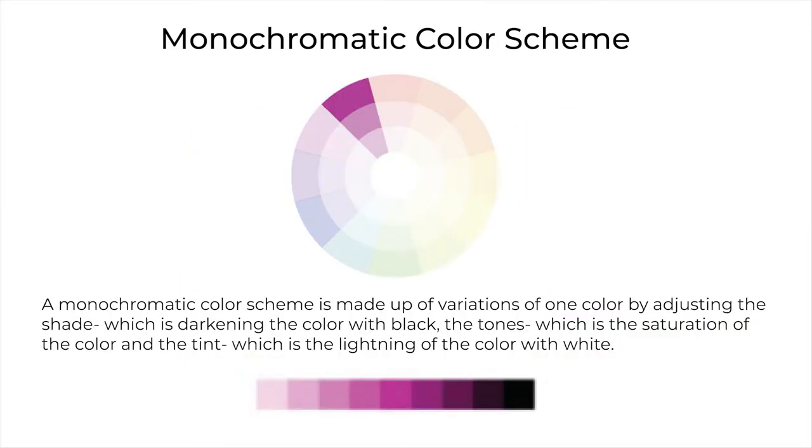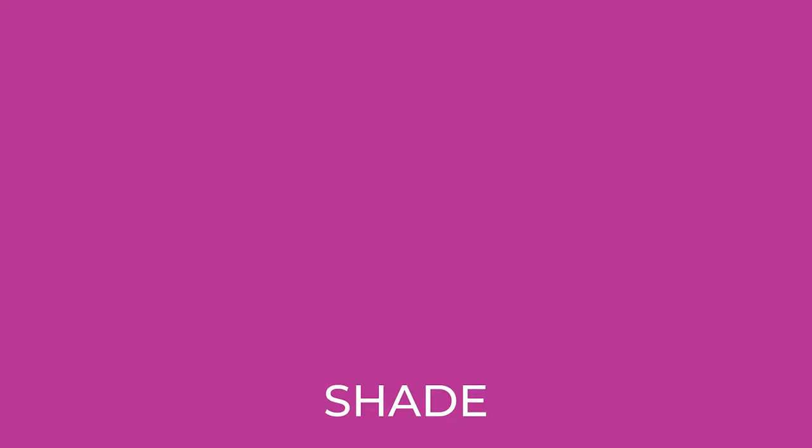The first is the monochromatic color scheme, which is made up of variations of one color by adjusting the shade — darkening the color with black — the tone, which is the saturation of the color, and the tint, which is the lightening of the color with white.